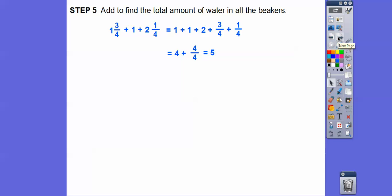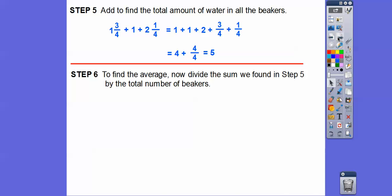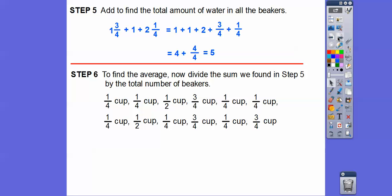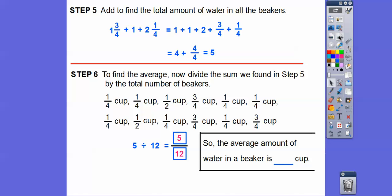Remember what we do when we find the sum to get the average? We divide by the number of beakers there were. To find the average, we divide the sum by the total number of beakers — there were twelve. So we take that five and divide it by twelve. Remember, division is just a fraction, so five divided by twelve is the same as five-twelfths. The average amount of water in a beaker is five-twelfths of a cup.